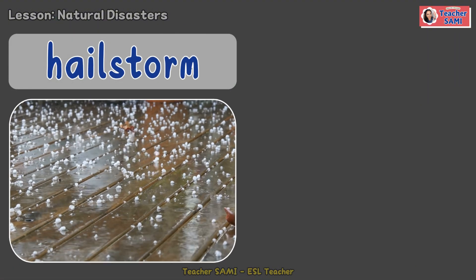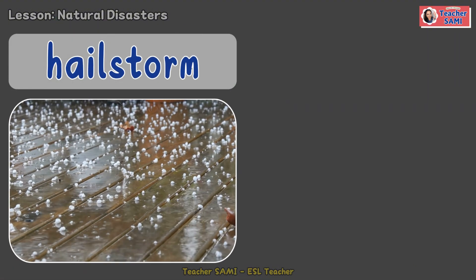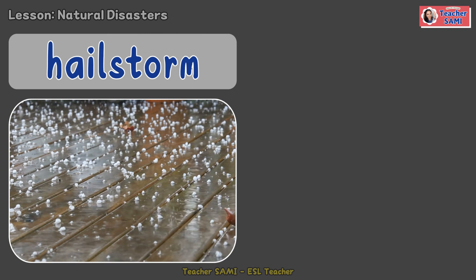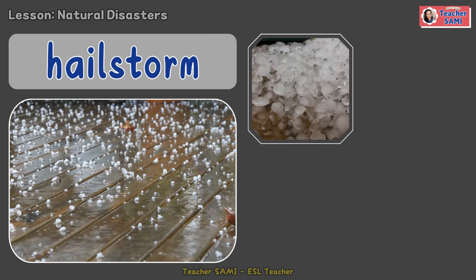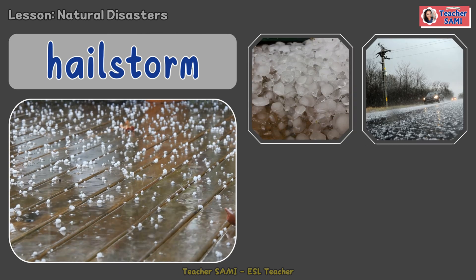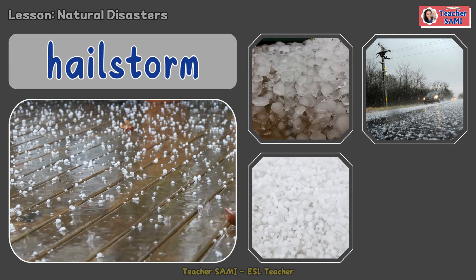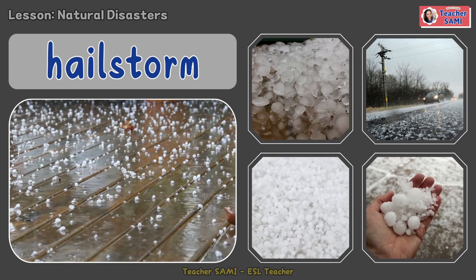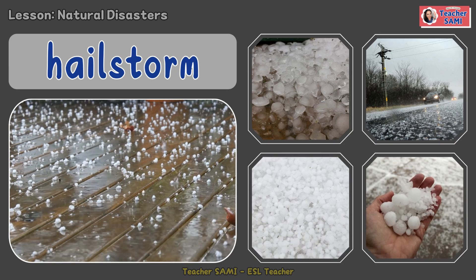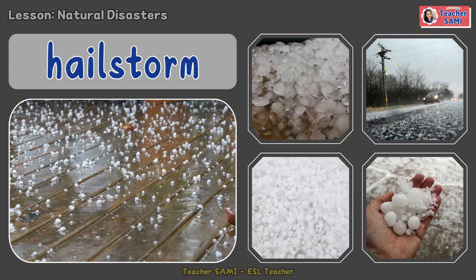Hailstorm: a hailstorm is when balls of ice fall from the sky like rain. These ice balls are called hail.